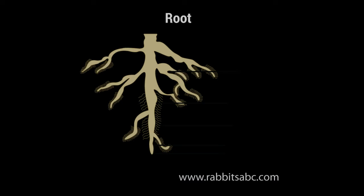The root system has the following parts: primary root, lateral root, root hairs, root tip, and root cap.